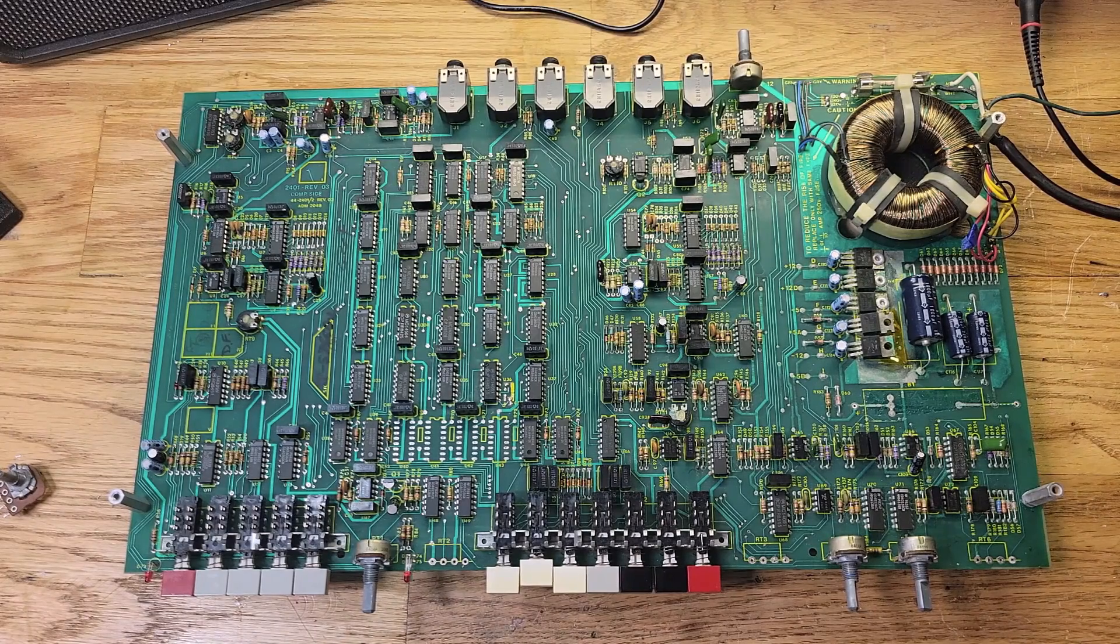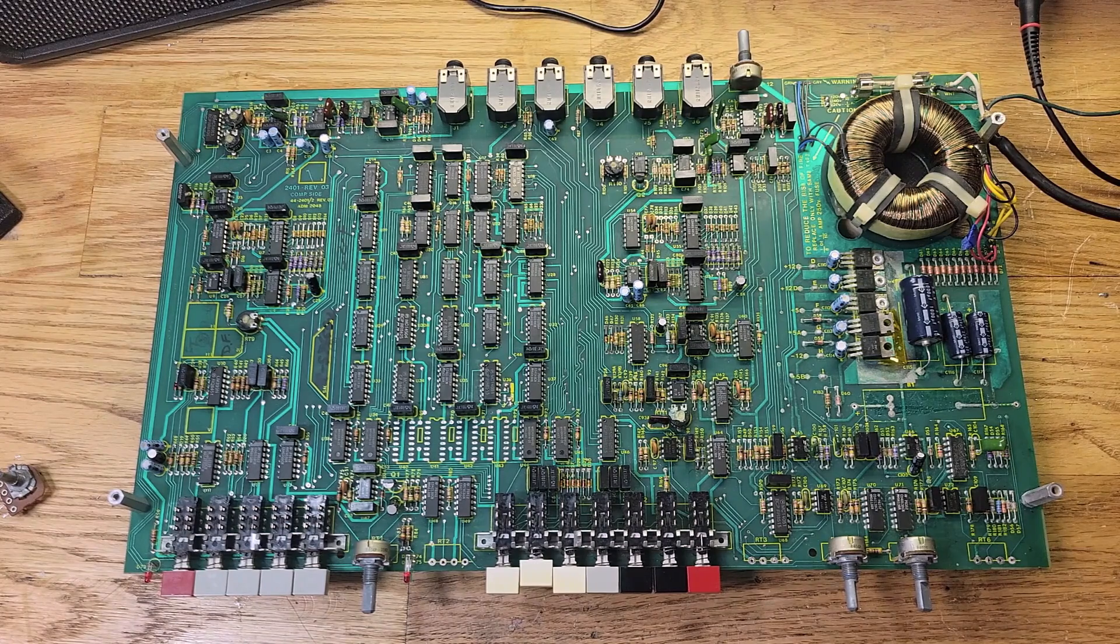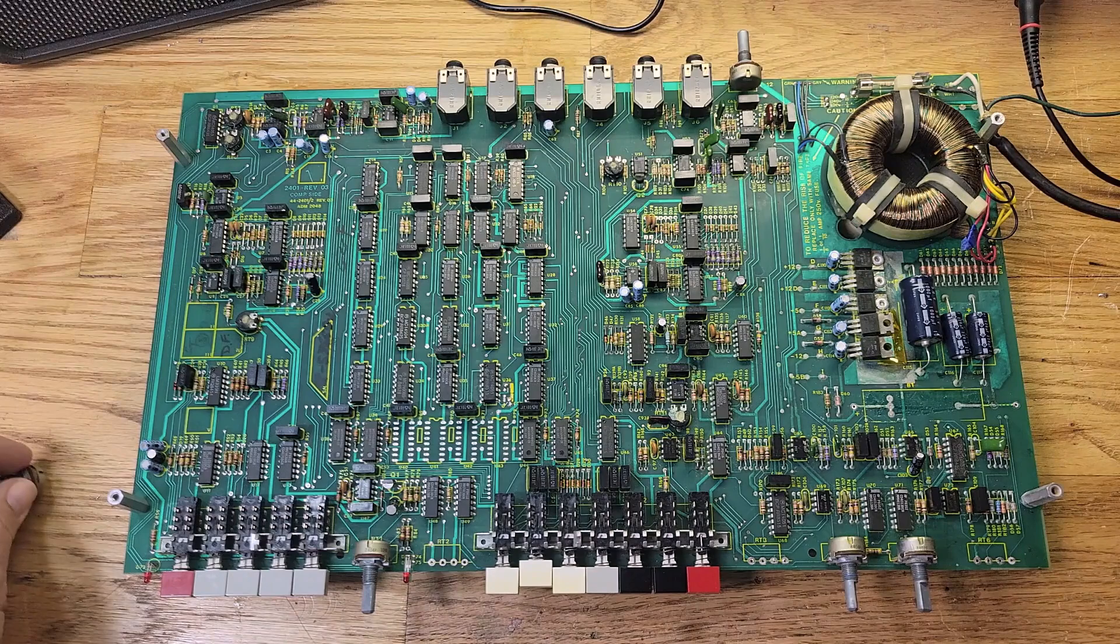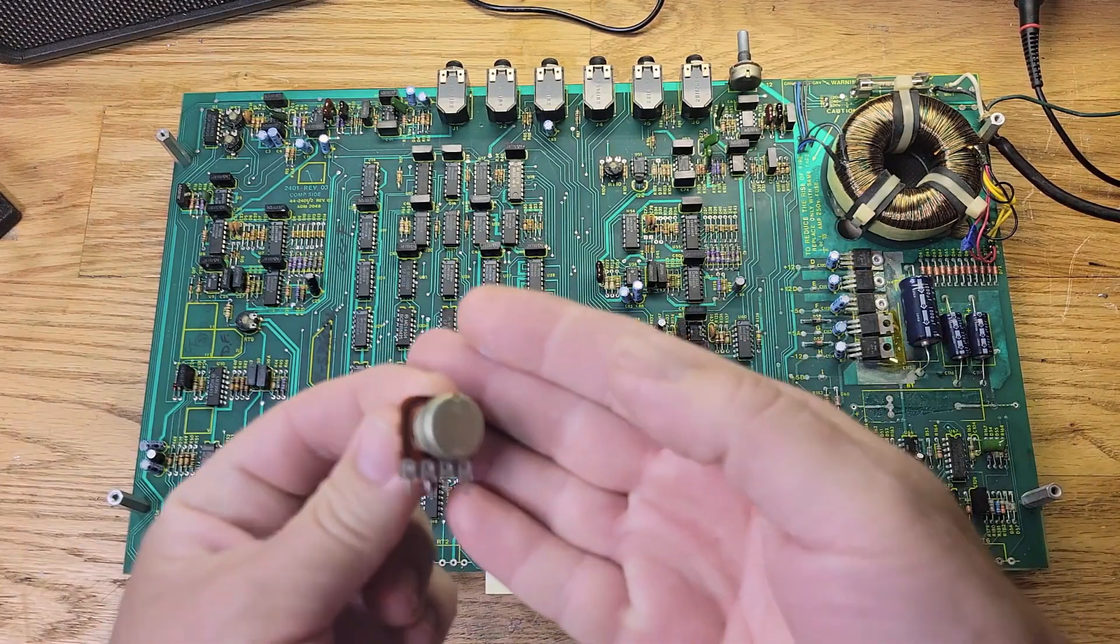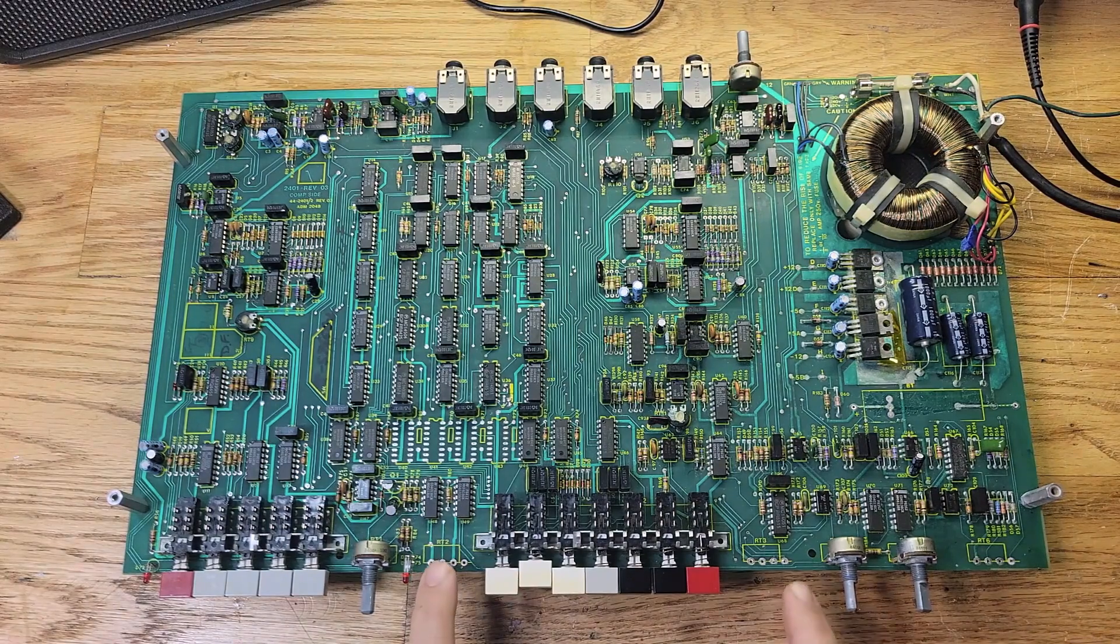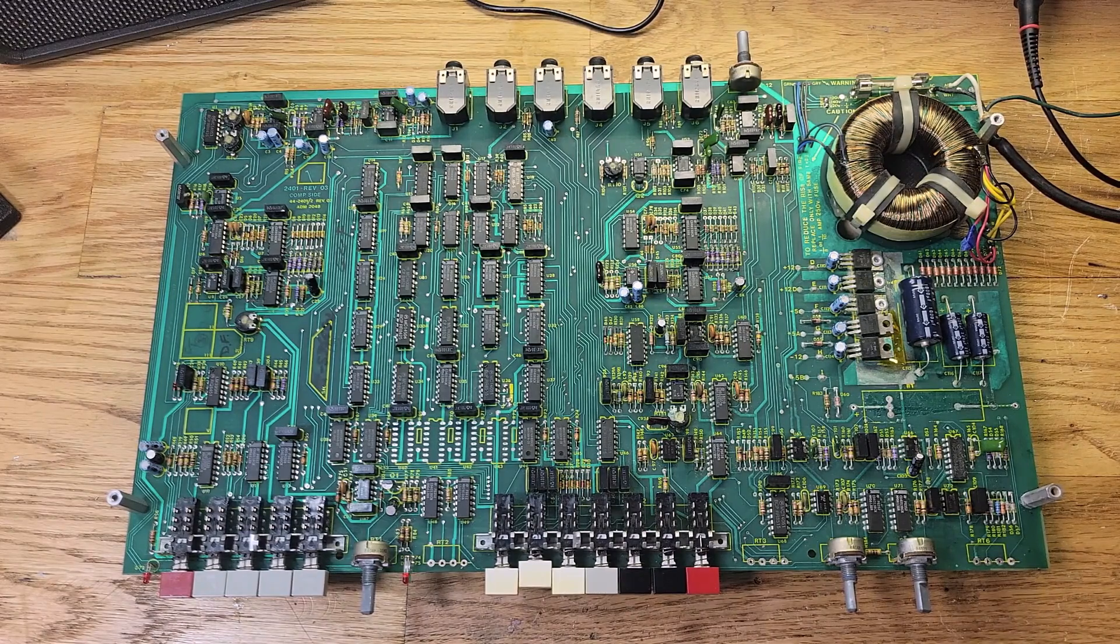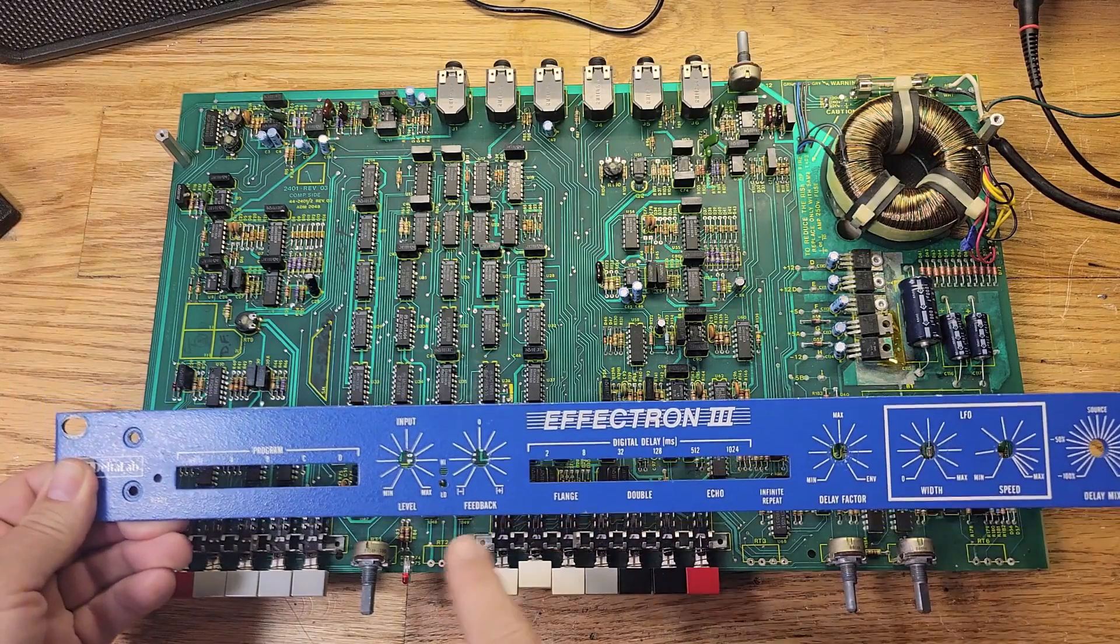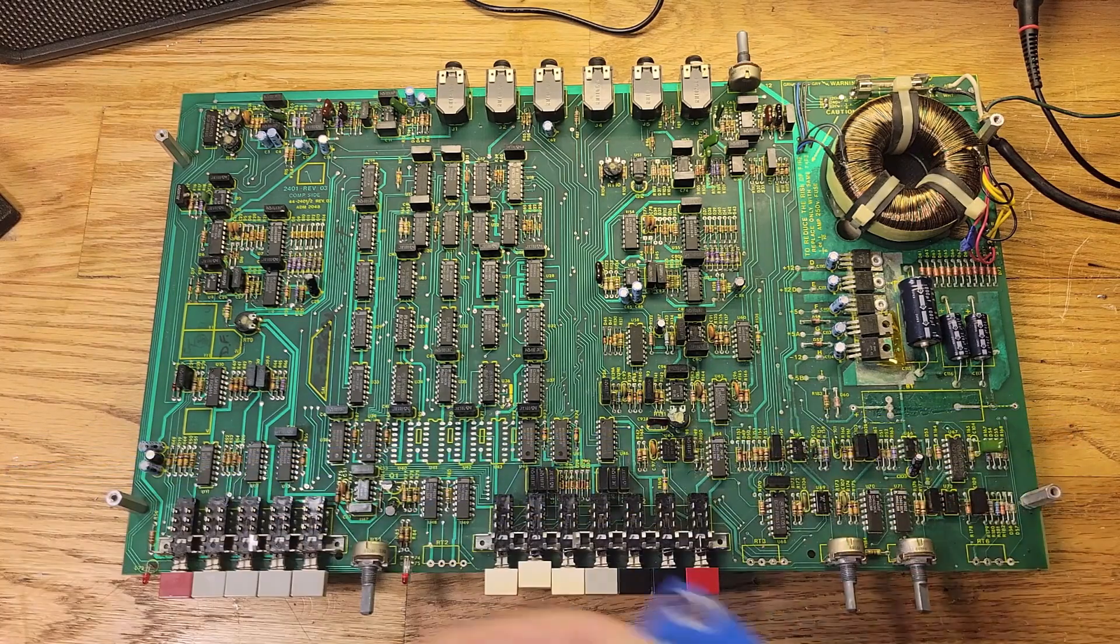Hey, welcome back everybody. This is part two of the Delta Lab Effectron 3 repair, where we had to stop last time because we came across these four-pin potentiometers that are not working.